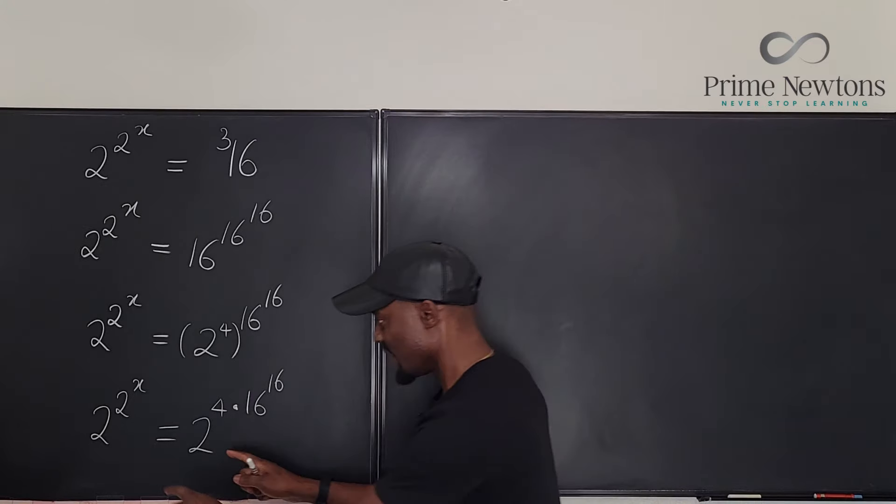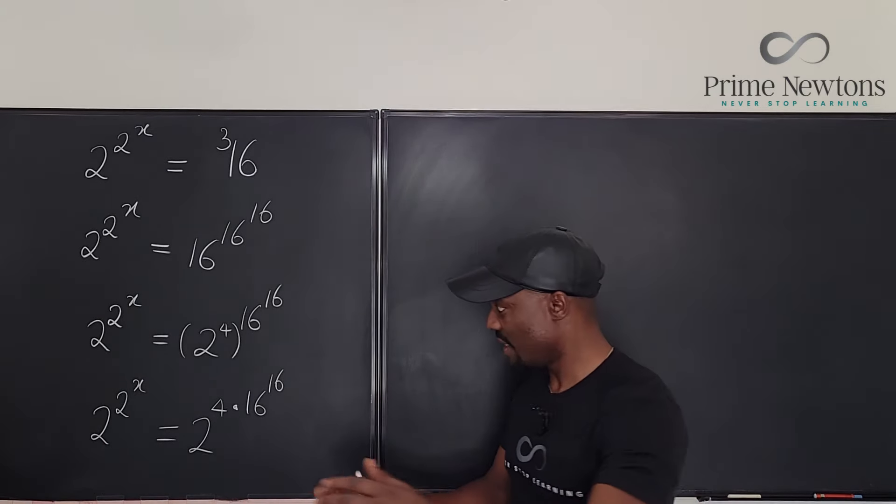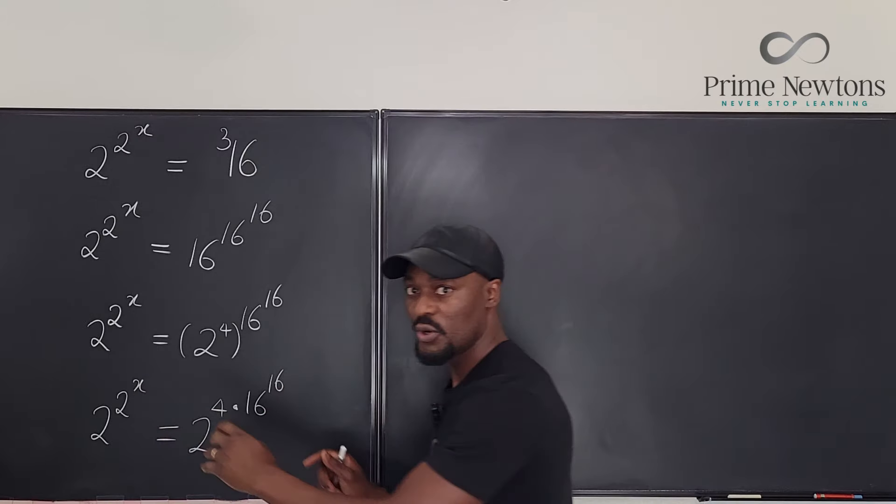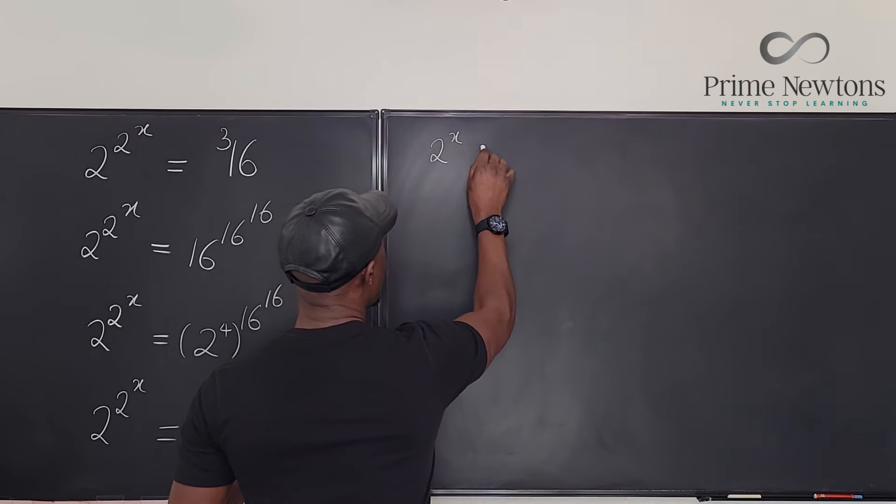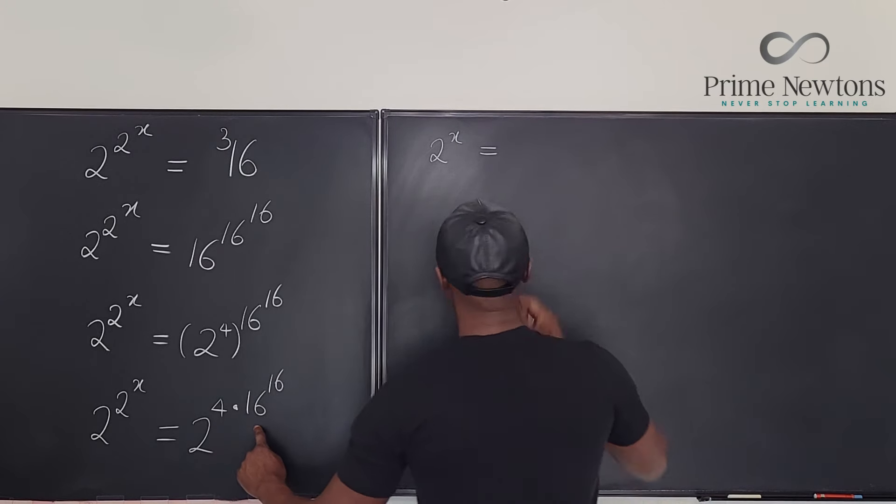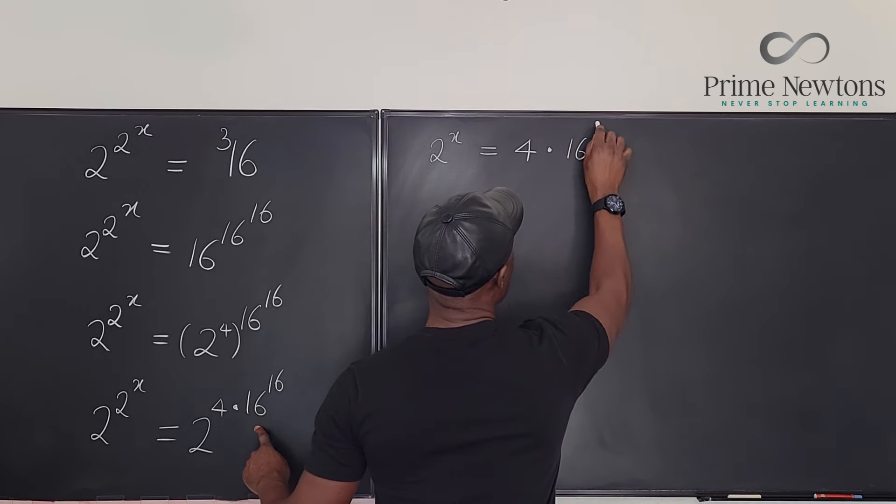Because now the two bases are the same and they're both greater than 1, then it means that the exponents also will be the same. So I can transform this into 2 to the x is equal to 4 times 16 to the 16.